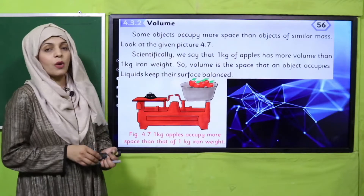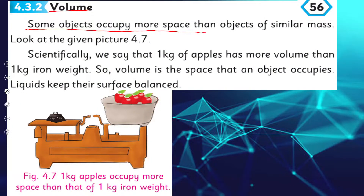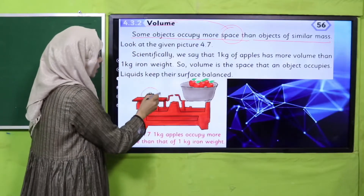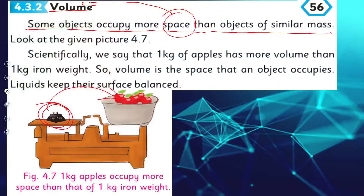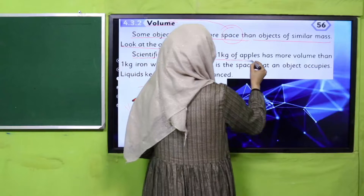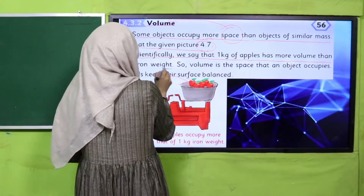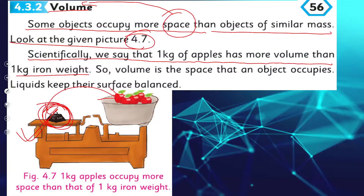Today we are going to discuss volume. Some objects occupy more space — that means their volume is more. Objects of similar mass, meaning both things equal one kilogram — that is mass. But the apples take up more space while the metal bar takes less space. The mass is similar but the volume is different. The volume is the space that an object occupies — that is the amount of space it takes up.